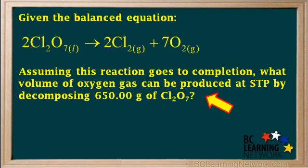Assuming this reaction goes to completion, what volume of oxygen gas can be produced at STP by decomposing 650 grams of Cl2O7?